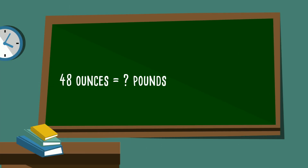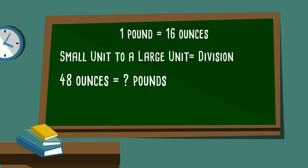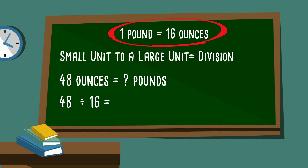Here's our first problem: 48 ounces equals how many pounds? Our hint is that one pound equals 16 ounces. The smaller the number, the larger the unit — so pounds is larger than ounces. We are moving from a small unit, 48 ounces, to a large unit, so we divide. 48 divided by 16 equals 3 pounds.